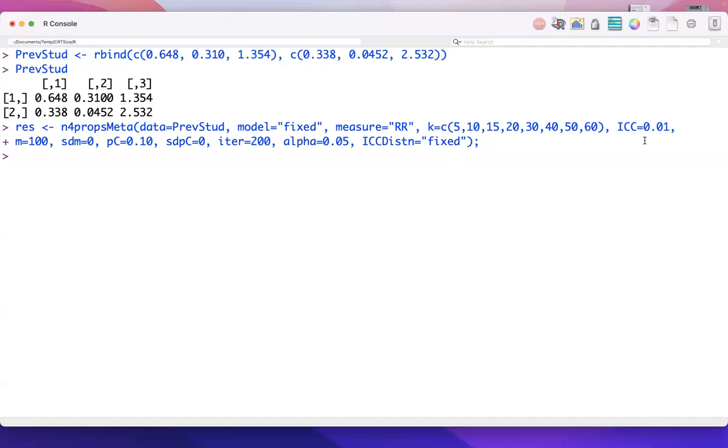We have a uniform approach where we can specify a lower and upper bound of a uniform interval. And then we can sample our ICC values from that distribution. And we also have a truncated normal approach as well.